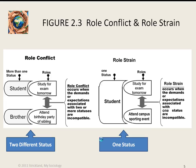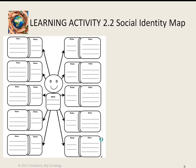Once you understand the concepts of statuses, roles, the different types of status positions, and role conflict and role strain, you're ready to complete learning activity 2.2, the social identity map.